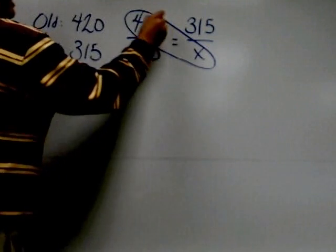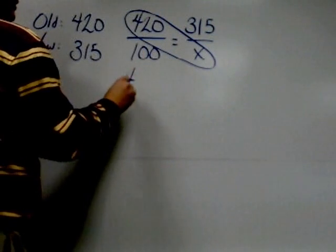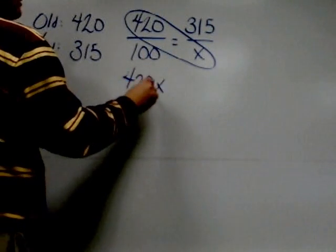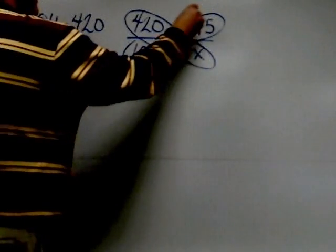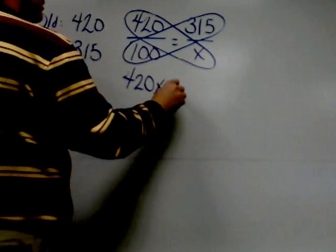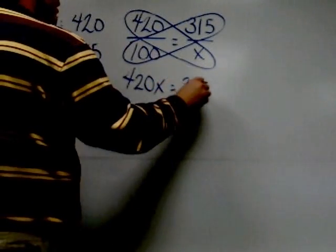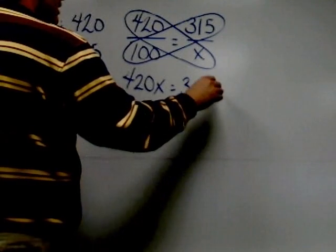Multiplying 420 and X and 315 and 100 together gives me 420X and 31,500 respectively.